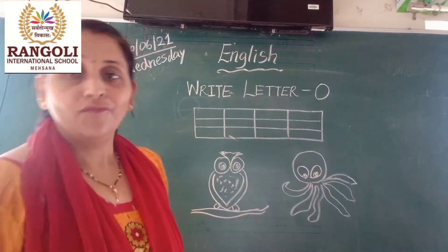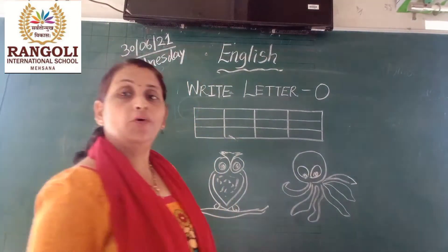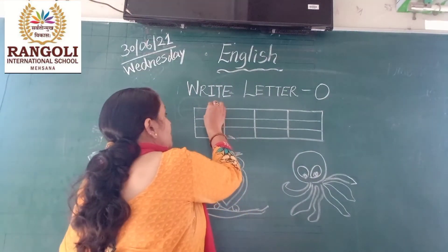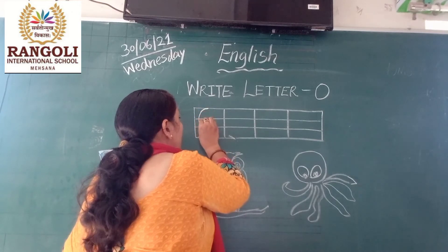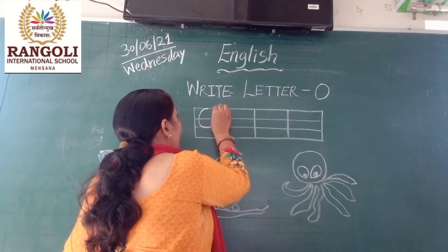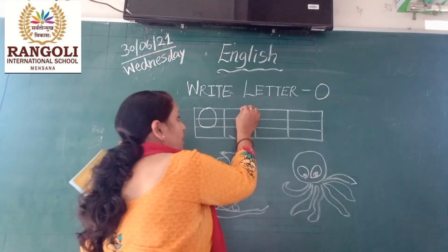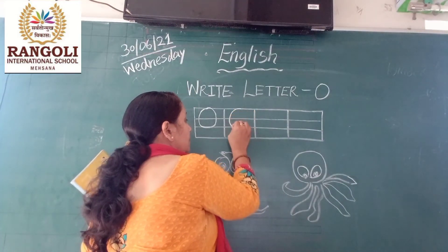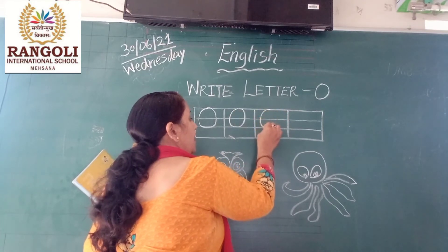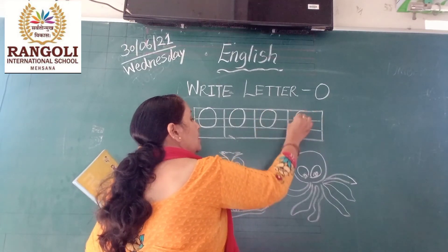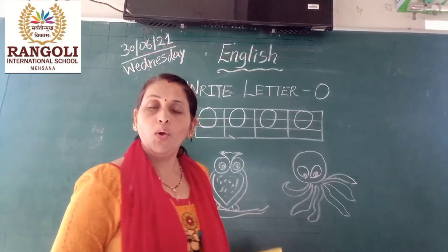So today we will learn about letter O. So how do you have to write letter O? Put your pencil on the line, slide and go to the second line, then reverse. This is letter O.